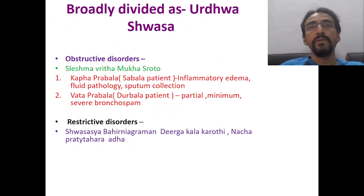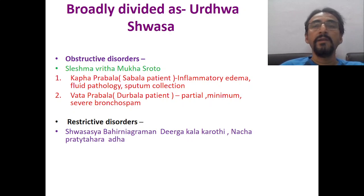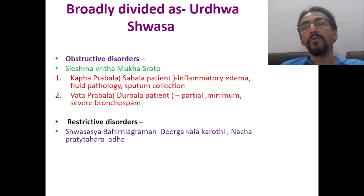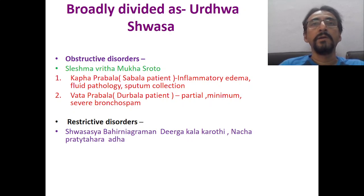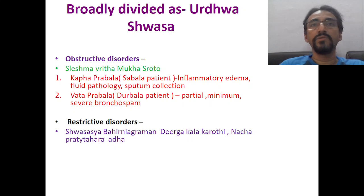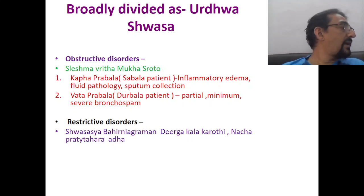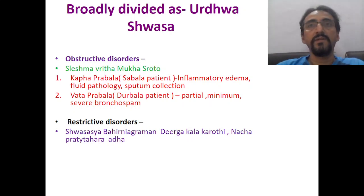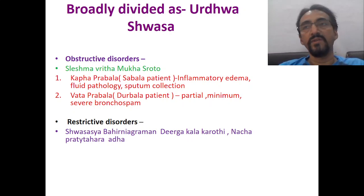Looking into Charak Samhita, when he classified different types of shwasas it is very clear — it is classified according to severity. The most severe conditions, which include Arishtalakshanas and advanced complications, are included under Mahashwasa. Somewhat less severe cases are under Urdhashwasa, and still less severe under Chinnaswasa, but all three are considered Asadhyam. The one which can be managed by continuous treatment is Tamakashwasa, and the one which is not dangerous at all is Shudraswasa. So broadly it is classified on the basis of severity.